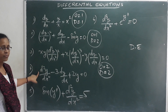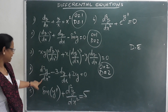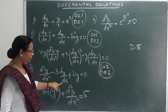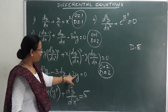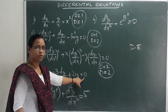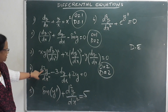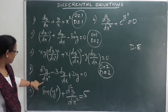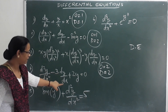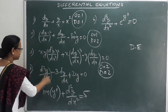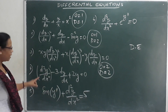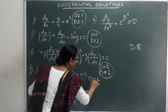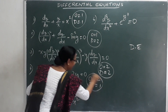The fourth question is: d²y/dx² − 3(dy/dx) + 2y = 0. The highest order derivative is d²y/dx², so the order is 2. The power of d²y/dx² is 1, so the degree is 1.